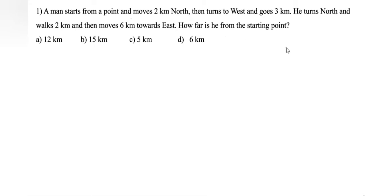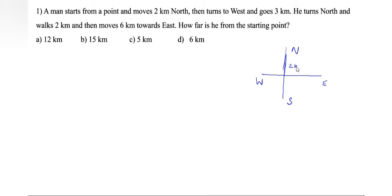First we will draw the direction details: north, south, west, east. He moves two kilometers north, then turns to west — west is in this side — turns to west this side and goes three kilometers.